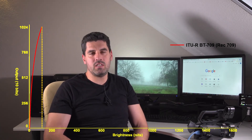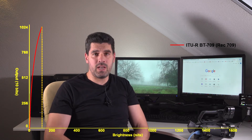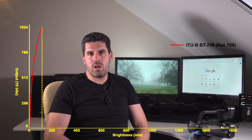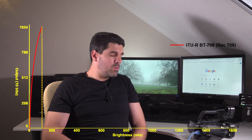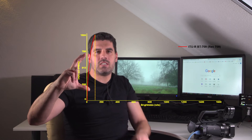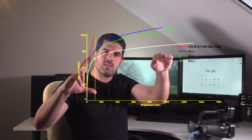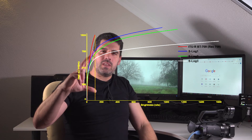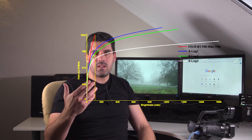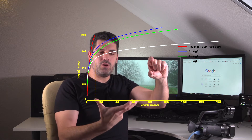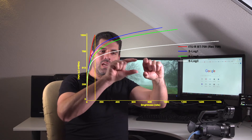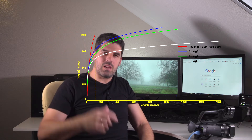Nowadays, cameras have evolved a lot. They can capture much more than the typical seven stops we had in 709. Now you can easily find cameras with 12, 13, or 15 stops — something very common in the market with digital sensors. But the output codec could still be the same, such as MPEG-2. So what we can do is apply a gamma curve that compresses the highlights. Applying double the light doesn't mean double the output level.